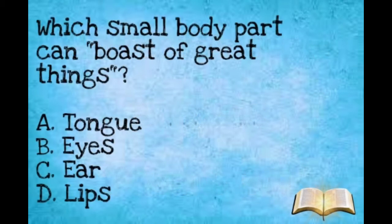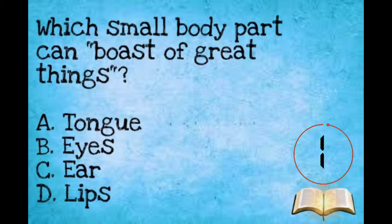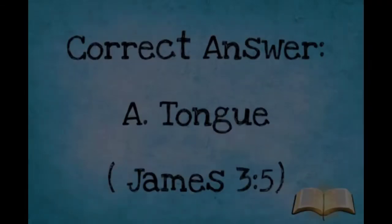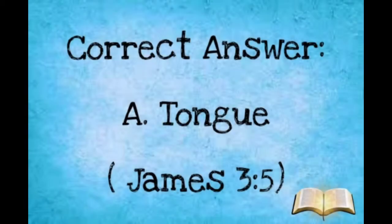Number six: Which small body part can boast of great things? A: Tongue. B: Eyes. C: Ear. D: Lips. The correct answer is letter A, tongue.